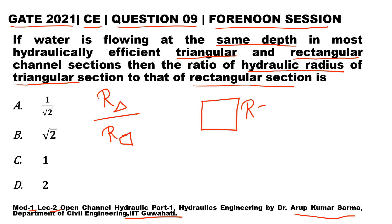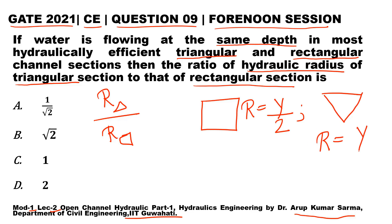For a rectangular channel, the hydraulic radius R equals y/2, where y is its depth. For a triangular channel, the hydraulic radius R equals y divided by 2√2. These are the standard results which one needs to remember to solve these questions quickly.